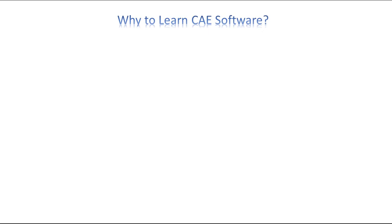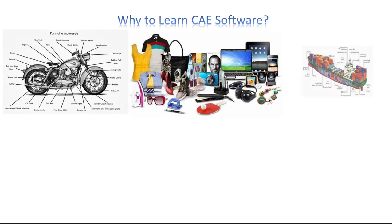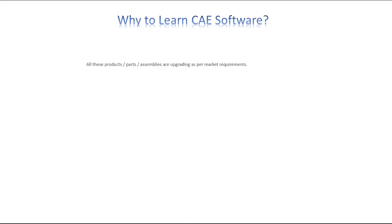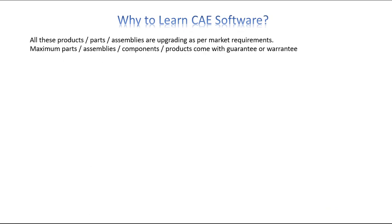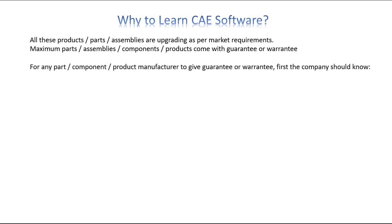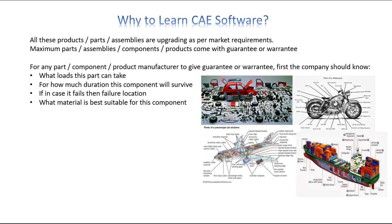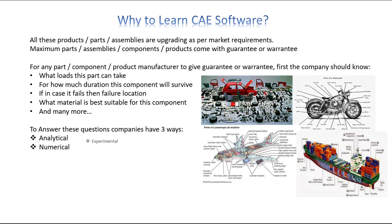Now let's understand why to learn CAE software. Every domain — be it automobile, marine, civil, aerospace, consumer products — have multiple parts, components, and assemblies which are upgrading as per market requirement. All these parts, assemblies and components come with guarantee or warranty. For any manufacturer to give guarantee or warranty, the company should know what load a part can take, how long the component will survive, the failure location if it fails, what material is best suitable, and many more. So, to answer these questions, companies have three ways: analytical, numerical, and experimental. This is called design validation.